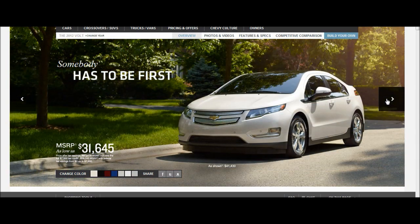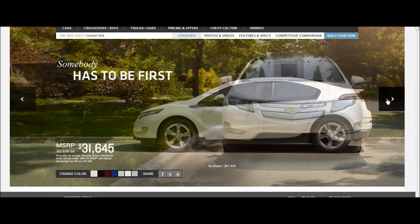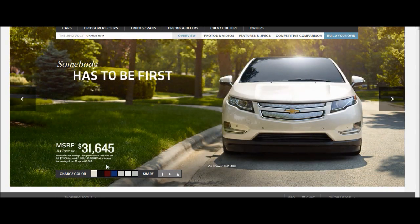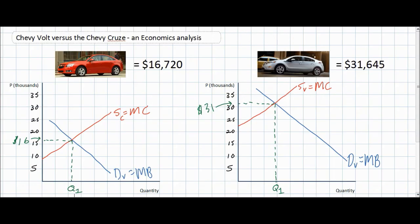But as we can see, the cars on the outside look almost the same. Once we've applied marginal benefit and marginal cost analysis to these two cars, we can see clearly that the price of the Chevy Volt is going to be much higher due to the higher marginal cost of production combined with the greater marginal benefit among consumers who drive the new plug-in technology.